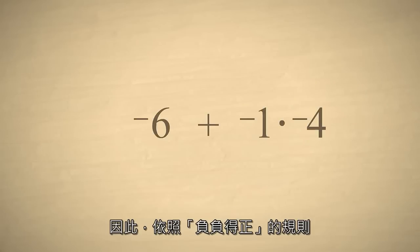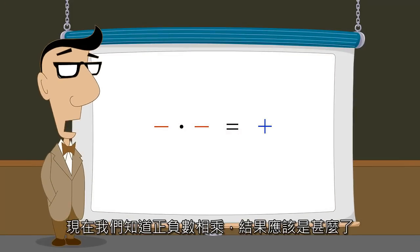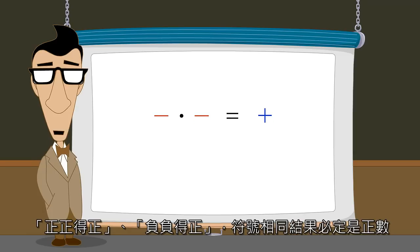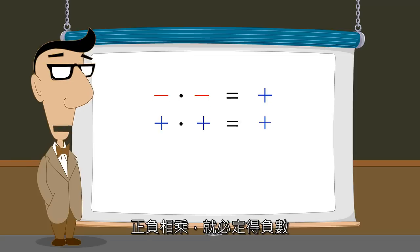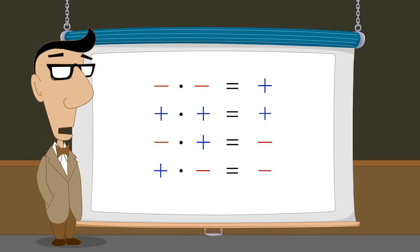So we get the correct answer if we make the rule that the product of two negative numbers is positive. Now we know what sign the result should be when we multiply two numbers of any sign. Multiplying two numbers with the same sign always gives a positive result, and multiplying two numbers with opposite signs always gives a negative result.